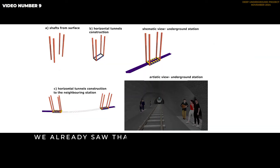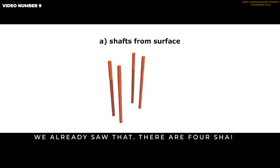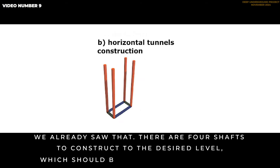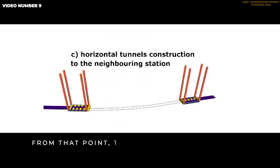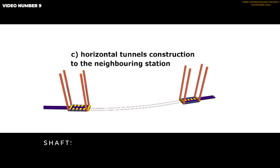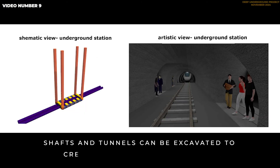We already saw that. There are four shafts to construct to the desired level, which should be connected with tunnels. From that point, the tunnel construction to the neighboring attack point can start. Shafts and tunnels can be excavated to create an underground station.